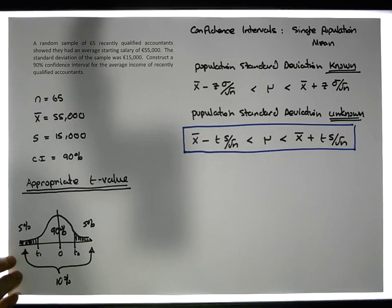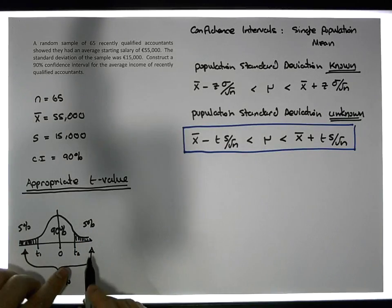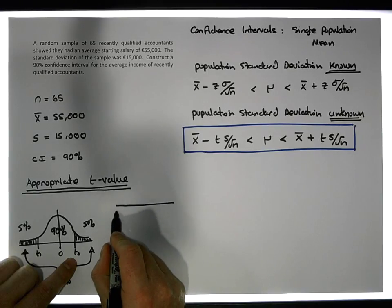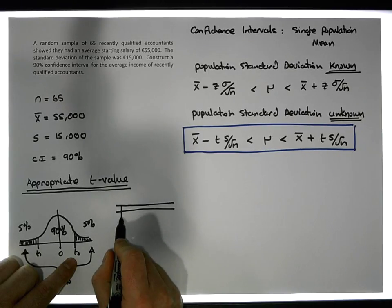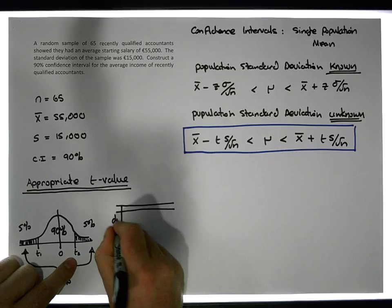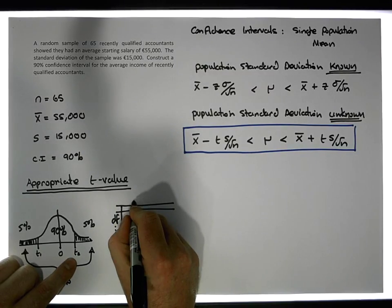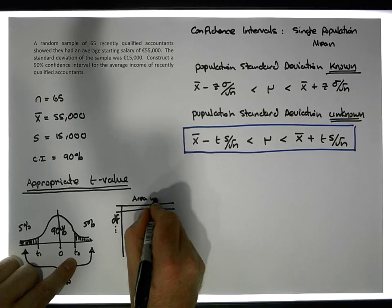The question is what t-value to use when five percent is in the right tail and five percent is in the left tail. Our t-tables have degrees of freedom listed down the first column and the area in the tail, specifically the area in the right tail, listed across this particular row.